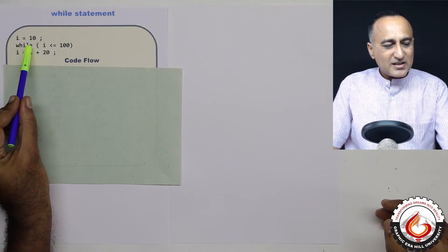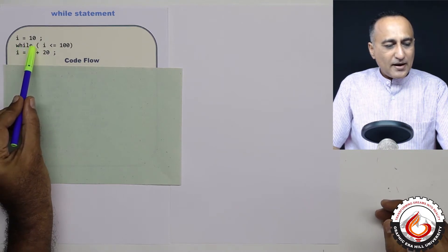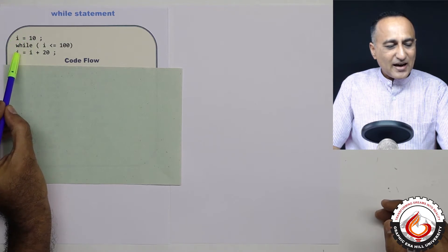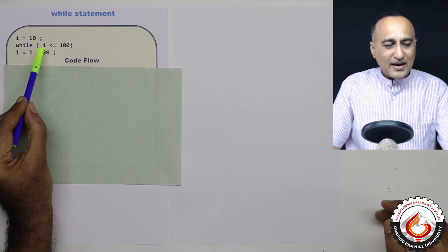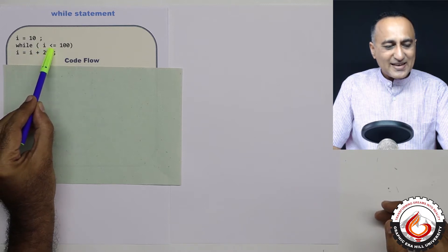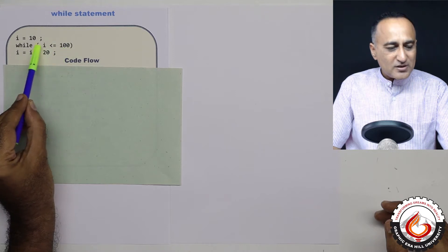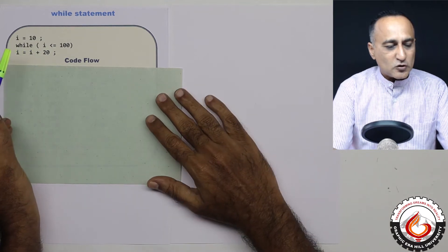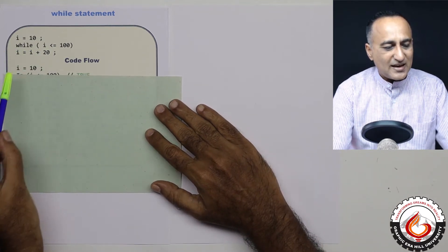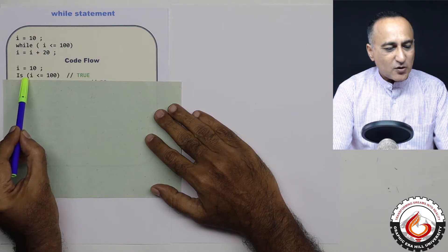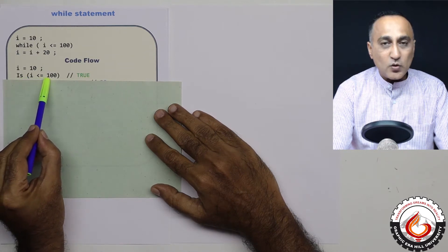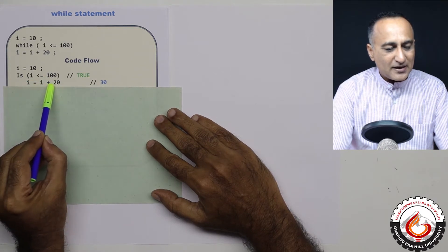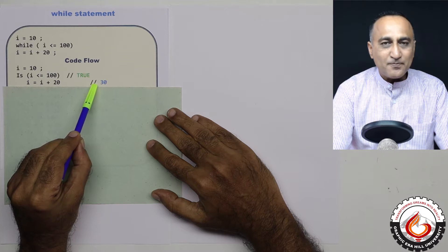Suppose I have a variable i equal to 10. I am initializing i to 10. After that, i will be increased by 20 every time as long as the value of i is less than or equal to 100. So i is assigned i plus 20 — this is known as the body of the loop. The first time, i is 10, and I ask the question: is i less than or equal to 100? Since this is true, I am increasing i by 20, so from 10, i has now become 30.